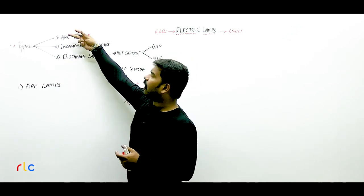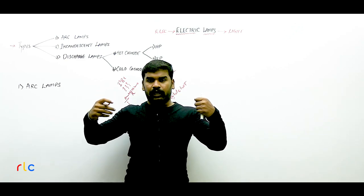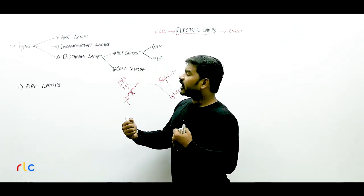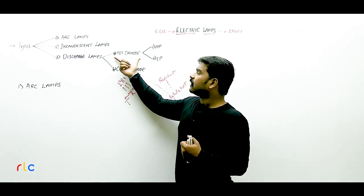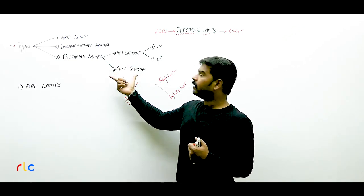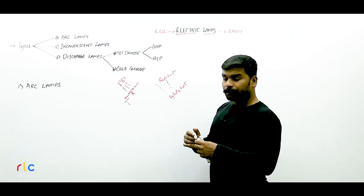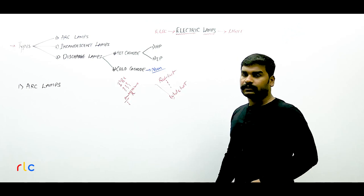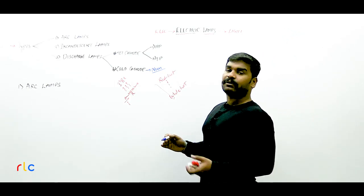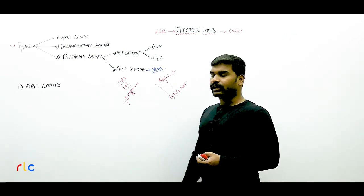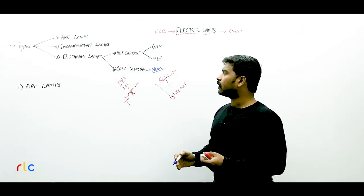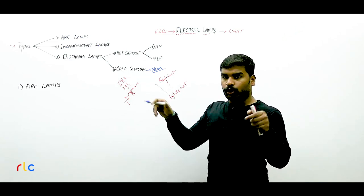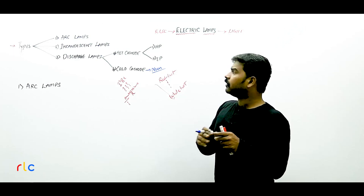An arc or discharge always happens between two terminals — one is the anode and the other is the cathode. If the cathode is hot, it is called a hot cathode lamp; if the cathode is cold, it is called a cold cathode lamp. A very popular exam question: neon lamps are a cold cathode lamp. Apart from neon, other types like sodium vapor or mercury vapor lamps are all hot cathode lamps.